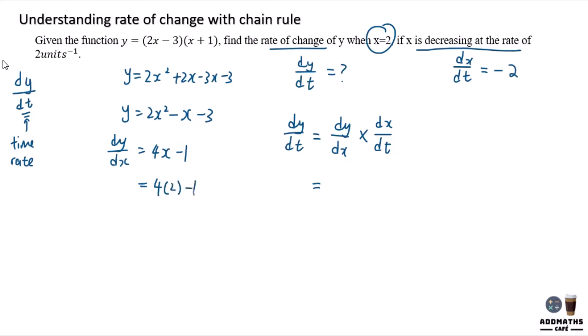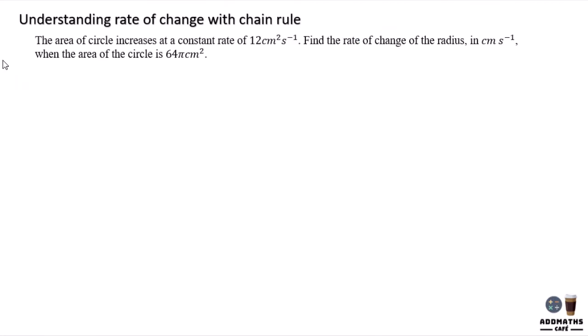You also know that x equals 2. Substitute x equals 2 and you'll have 4 times 2 minus 1, you'll get 7. So dy/dx is 7 times dx/dt which is negative 2, giving you negative 14. This is dy/dt, the rate of change of y.